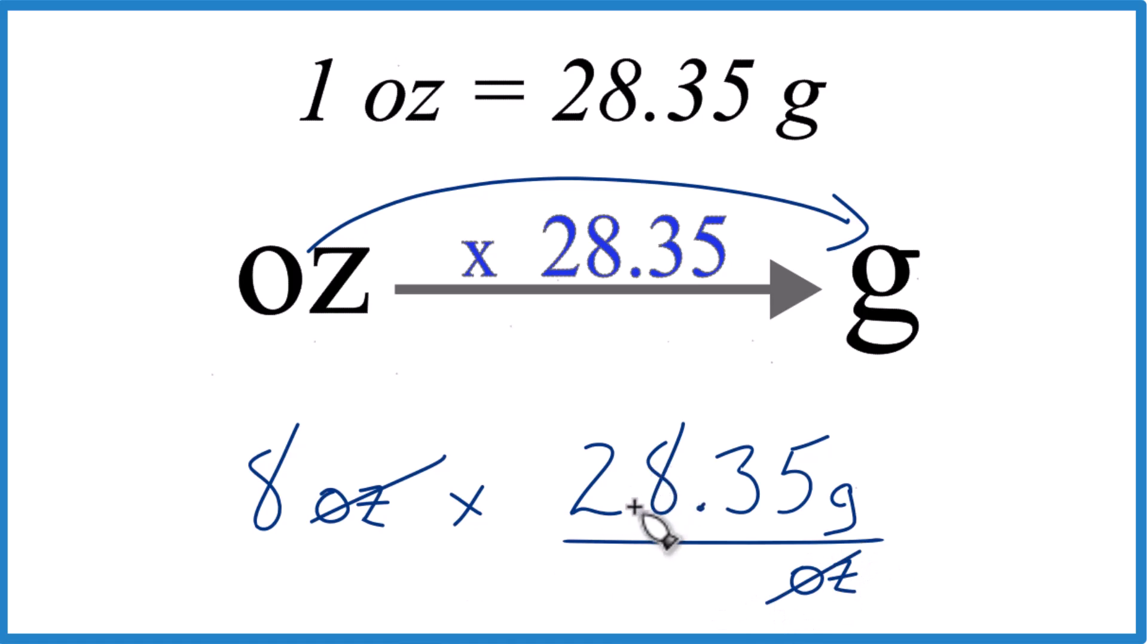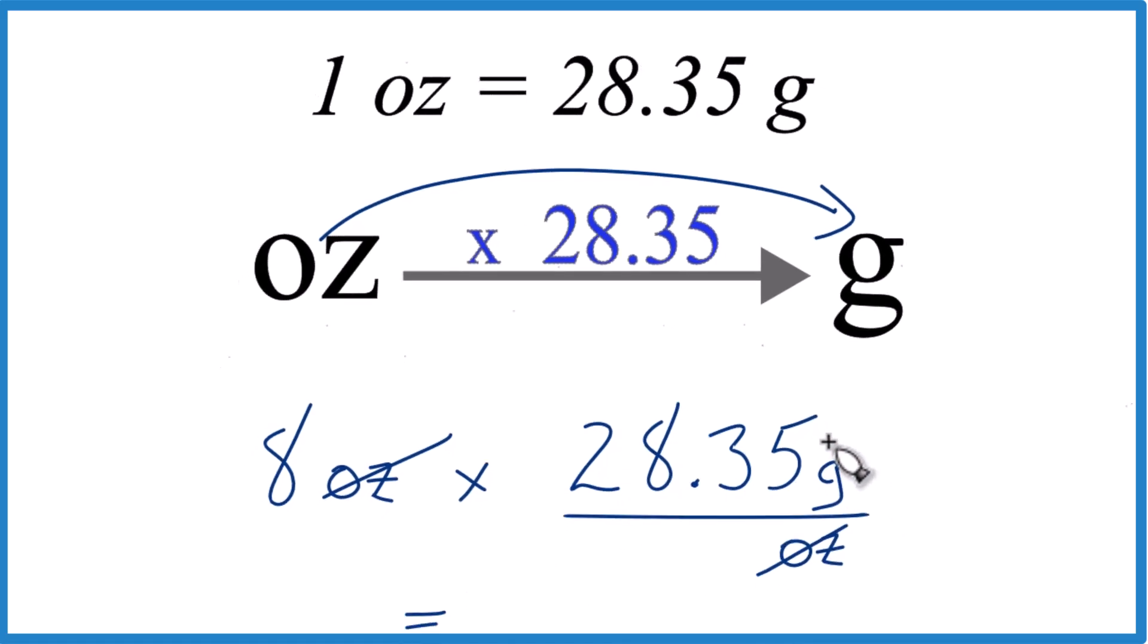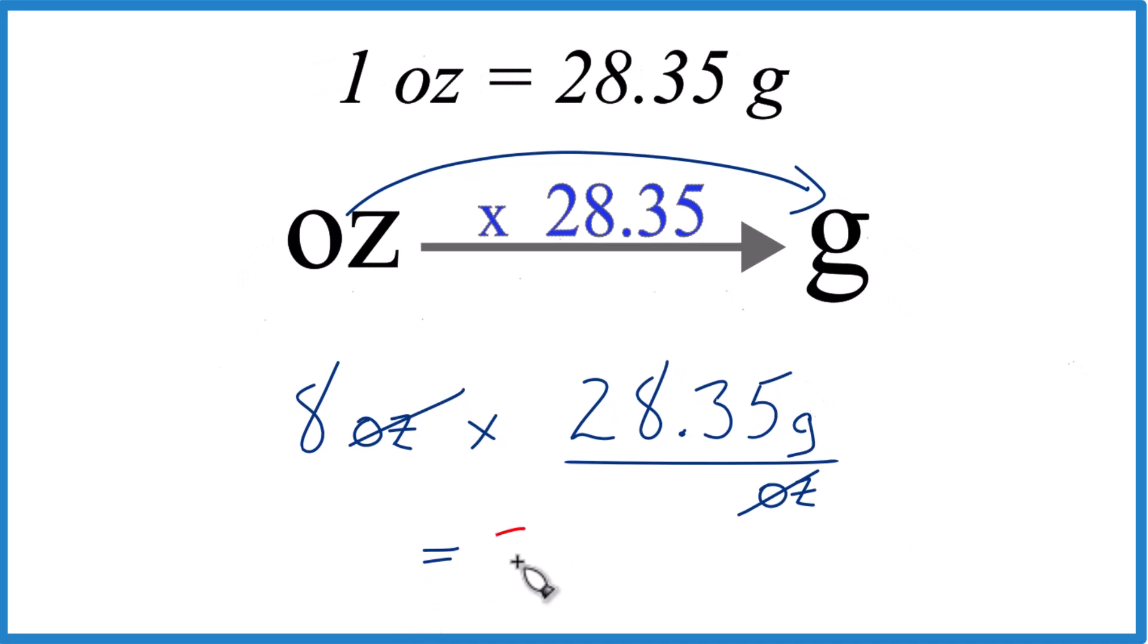So 8 times 28.35 grams, that equals 226.8 in the units. That's all that's left there is grams. That's what we're looking for.